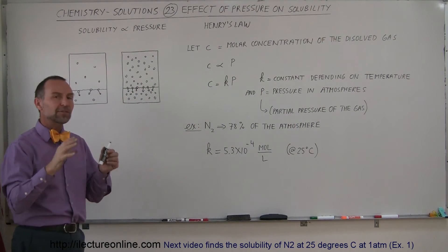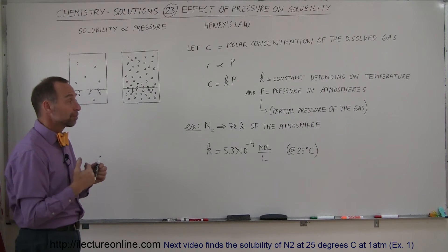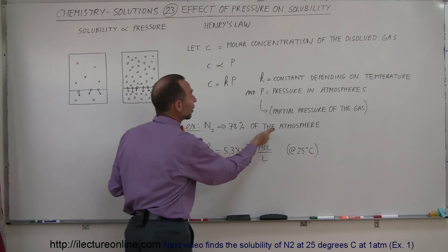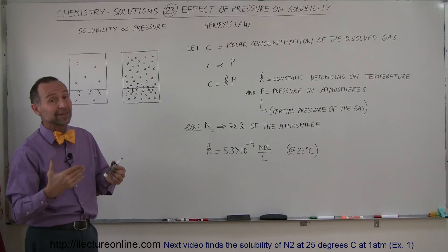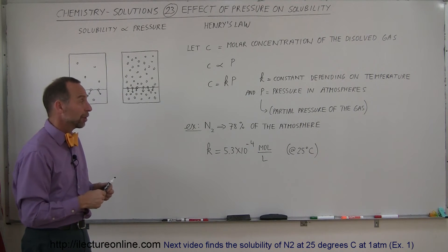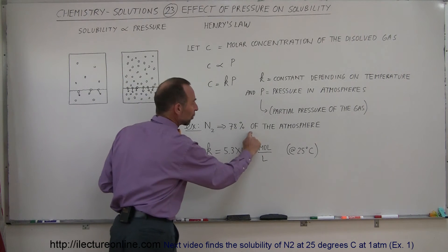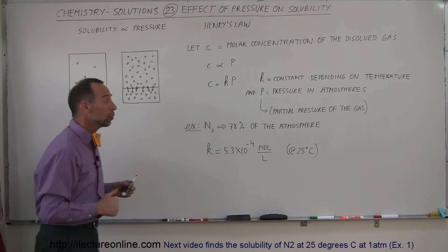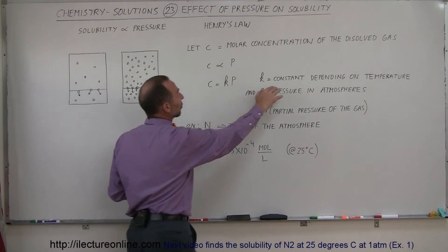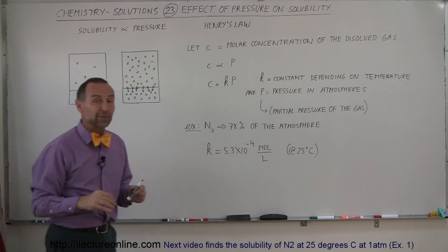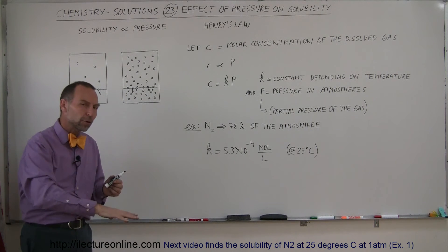If we're concerned about how much a gas will be dissolved in the solution, we want to know the partial pressure of that gas. For example, nitrogen makes up 78% of Earth's atmosphere, so the partial pressure of nitrogen gas in the atmosphere will be only 78% of the total atmospheric pressure. We don't put the whole atmospheric pressure into the equation — only the partial pressure of the gas that's dissolving into the solution. Also, K represents a constant that depends on temperature, because we already know that temperature dependency is also important.